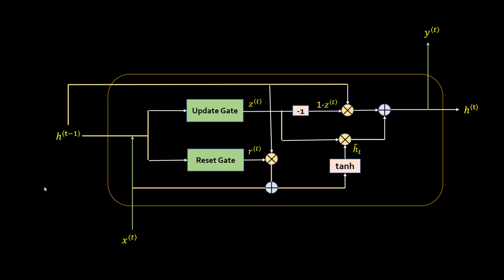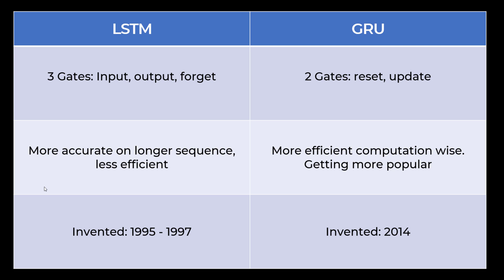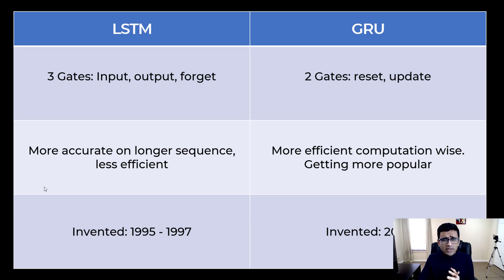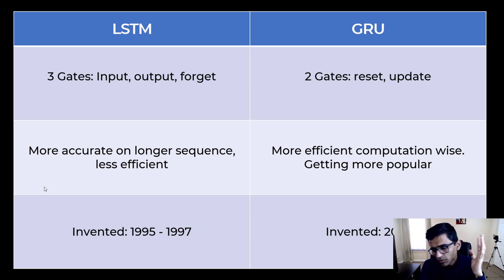GRU is a little bit more lightweight than LSTM. LSTM has three gates; GRU has only two. LSTM is more accurate on longer sequences but takes a little more time and is less efficient. There are cases where both perform equally well, but GRU is overall more efficient computation-wise and is getting more popular. LSTM was invented between 1995 and 1997, while GRU was invented in 2014. I hope this video gives you some understanding of GRU. This was all theory, and in the future I will try to cover coding as well.